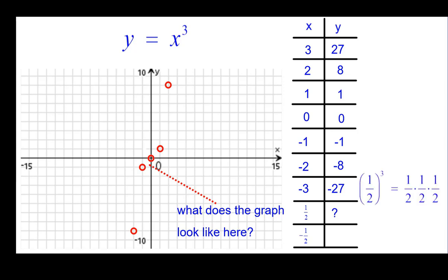So when you cube 1 half, a half times a half times a half, 2 times 2 times 2 is 8. So that's 1 eighth. And when you cube negative 1 half, an odd number of negative factors will yield a negative answer, negative 1 eighth.